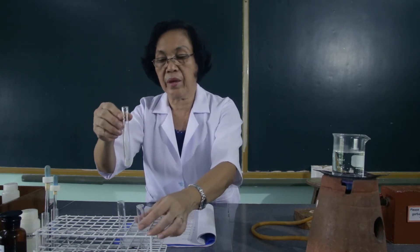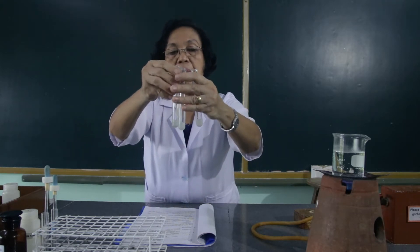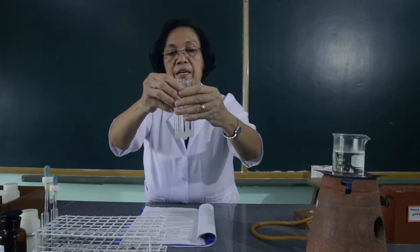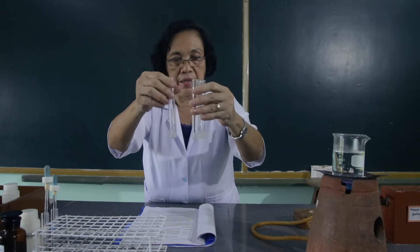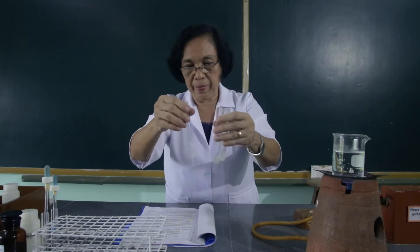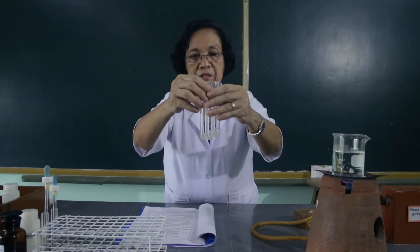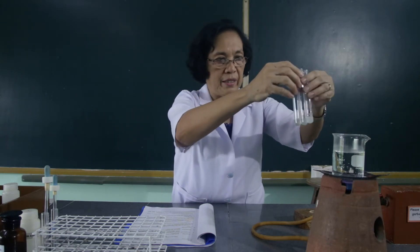The third test tube will serve as our control, so we will not add anything to the third test tube. With these three test tubes, we will place them into the water bath to heat it and boil them.